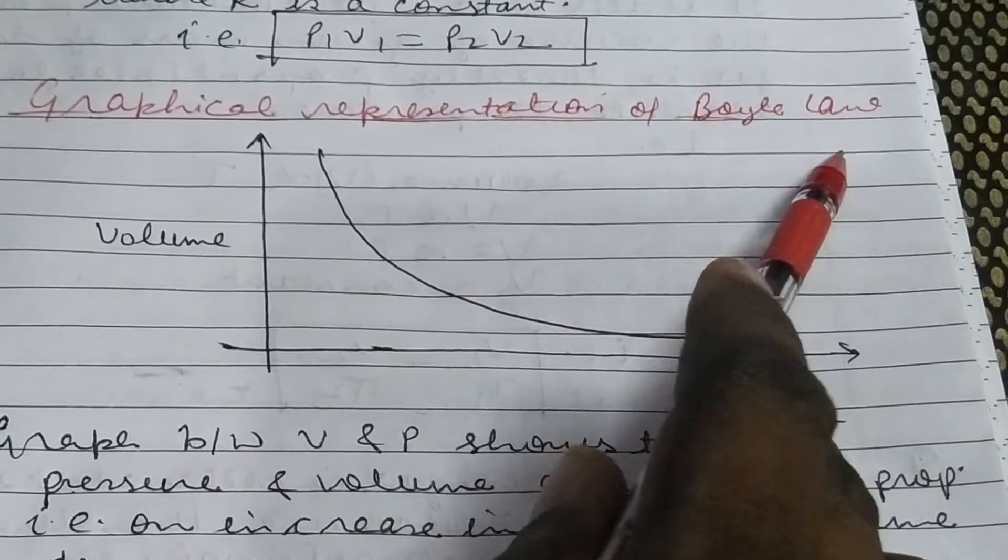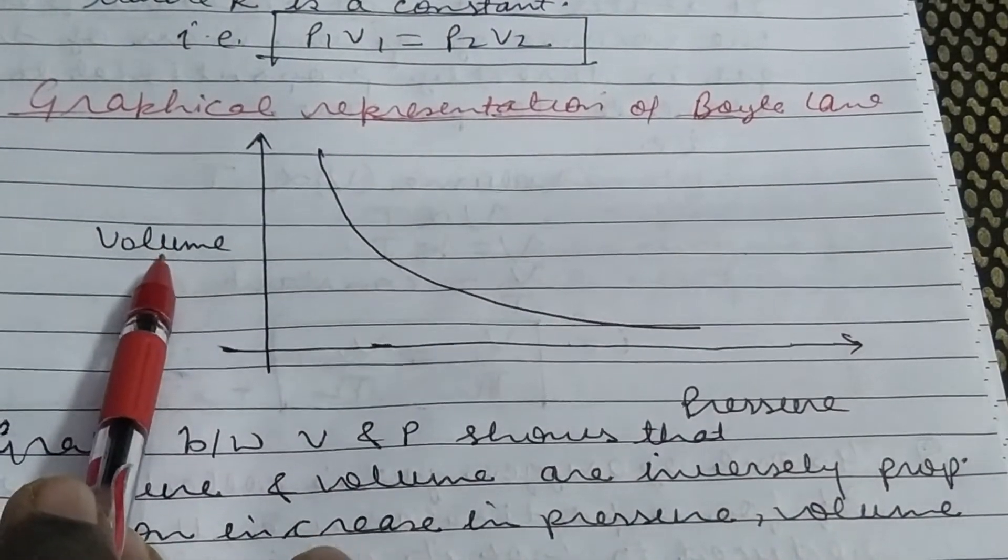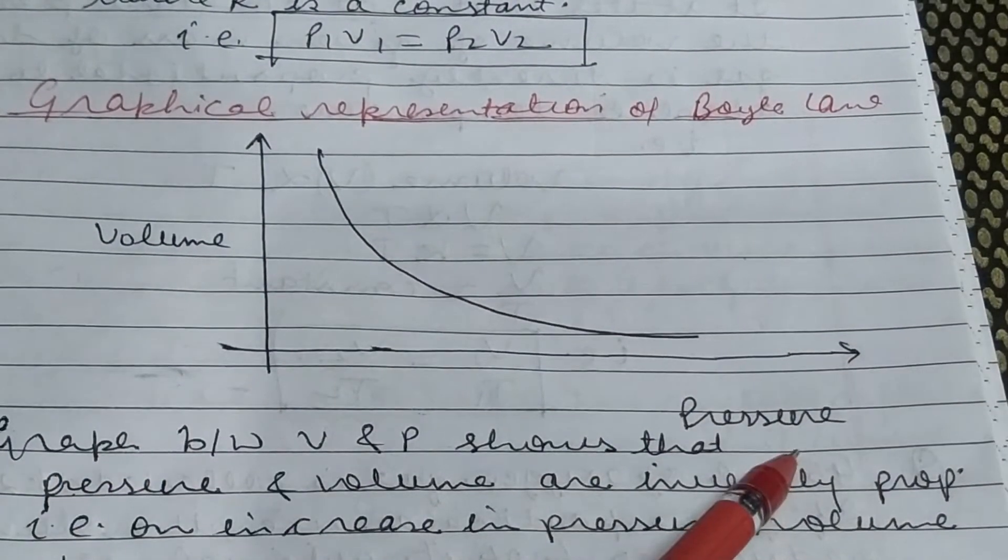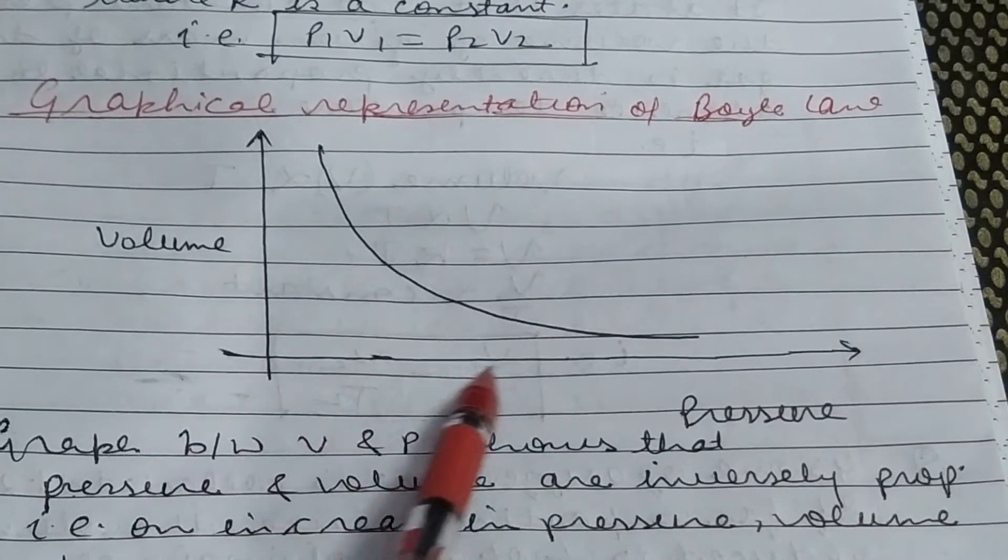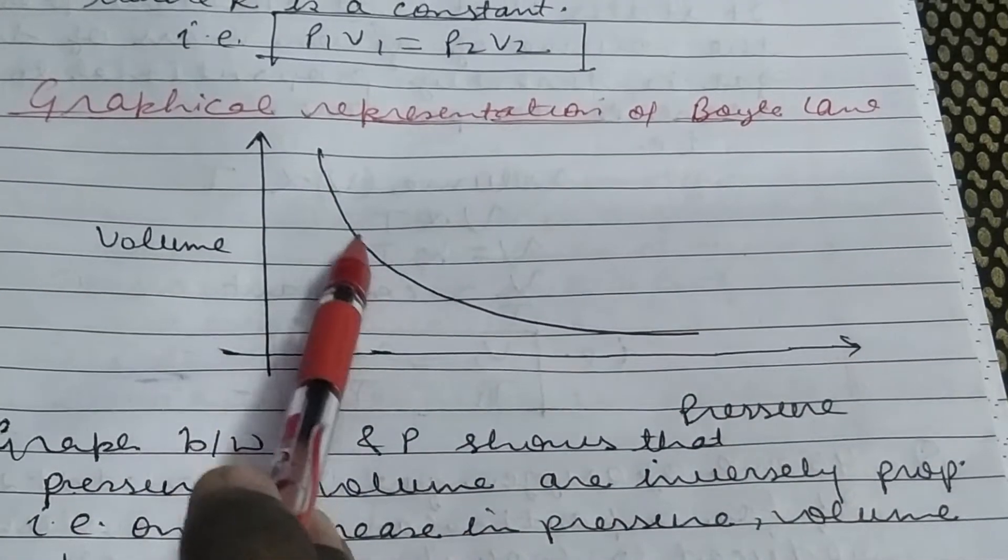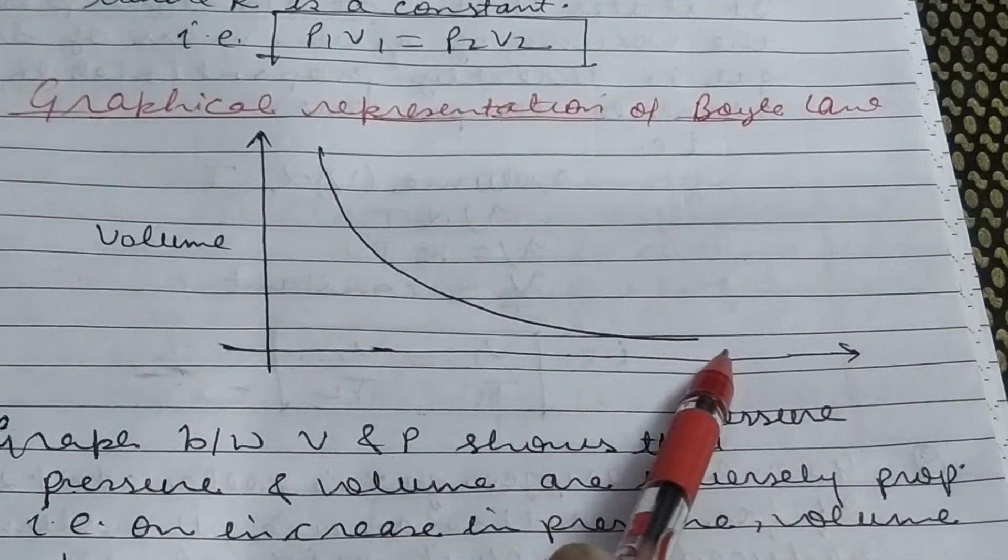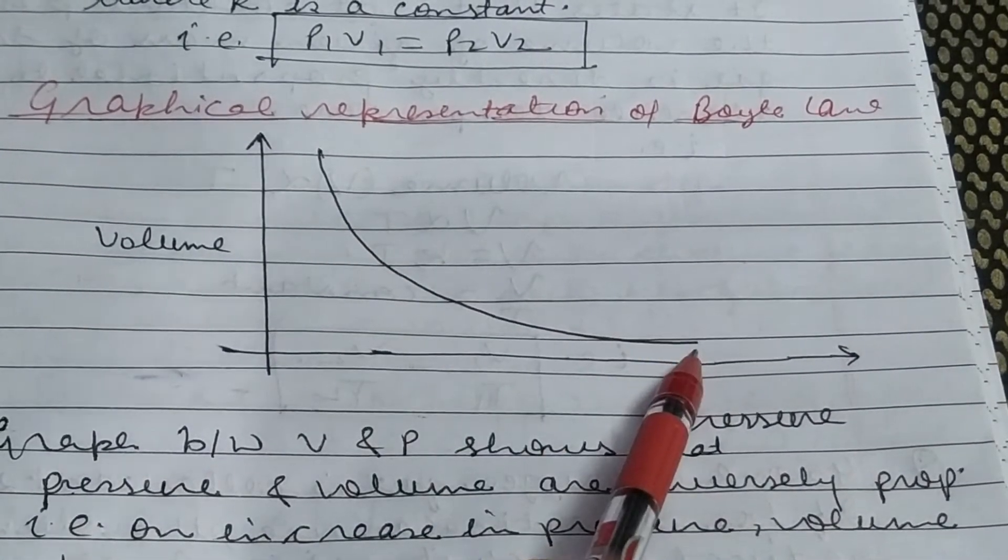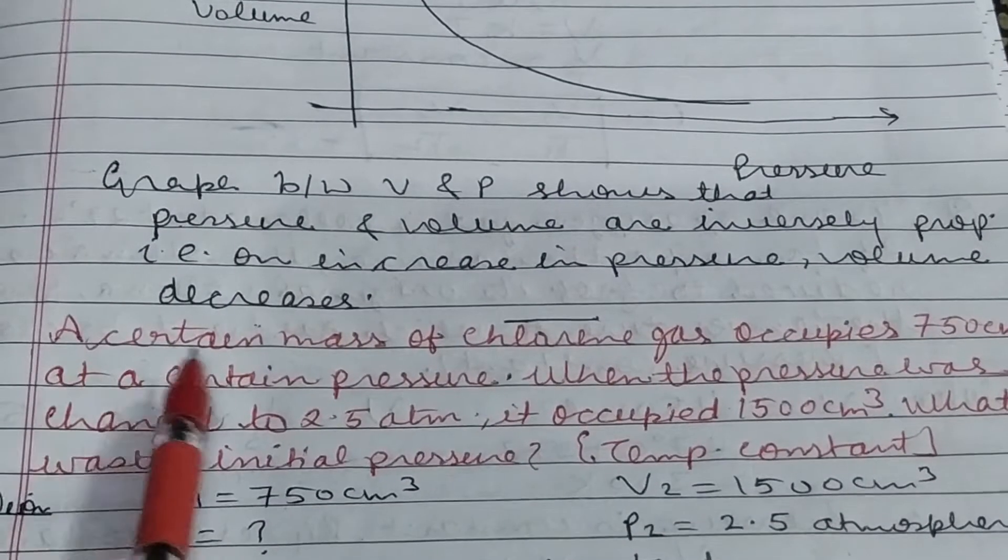Graphical representation of Boyle's law: if you plot the graph between volume and pressure, you can see that if you increase pressure, volume decreases continuously in a curved path.